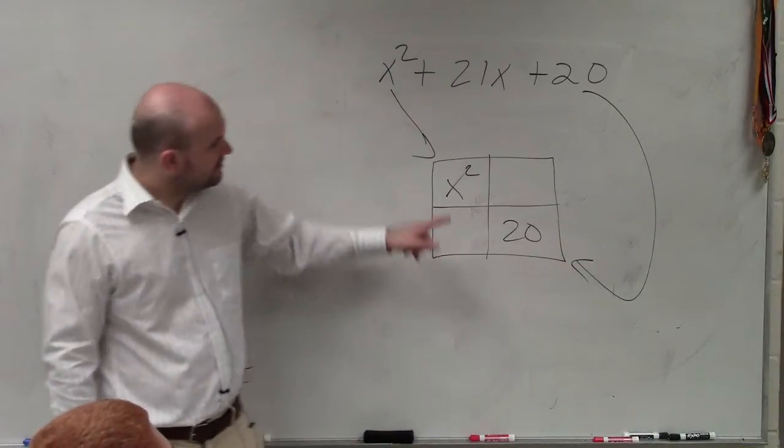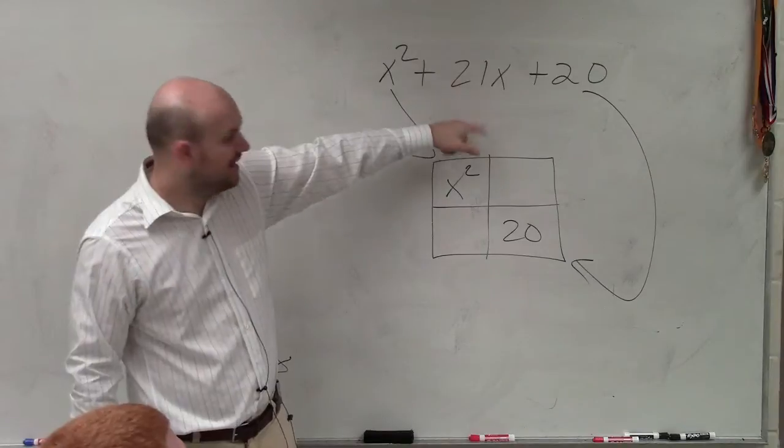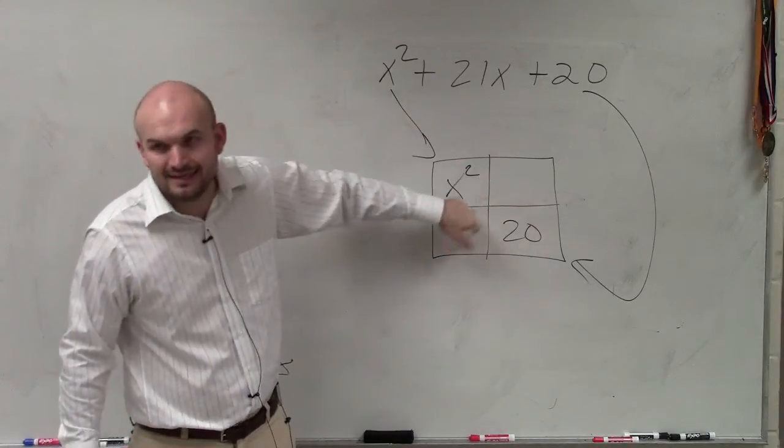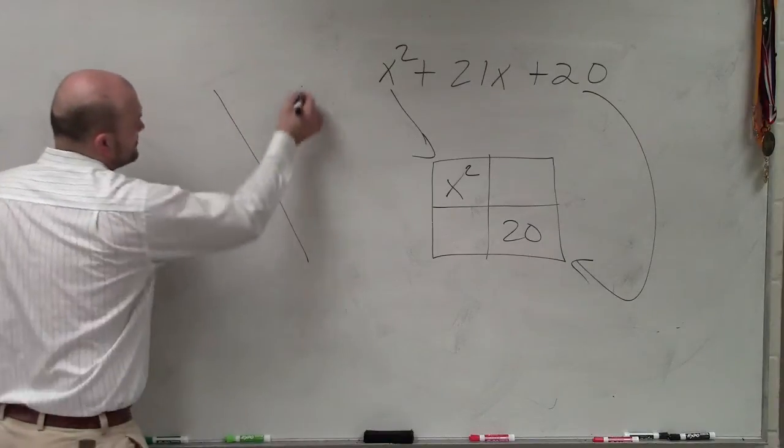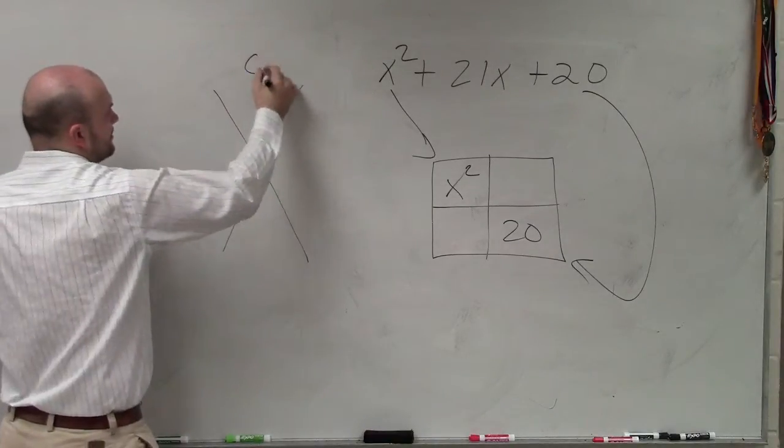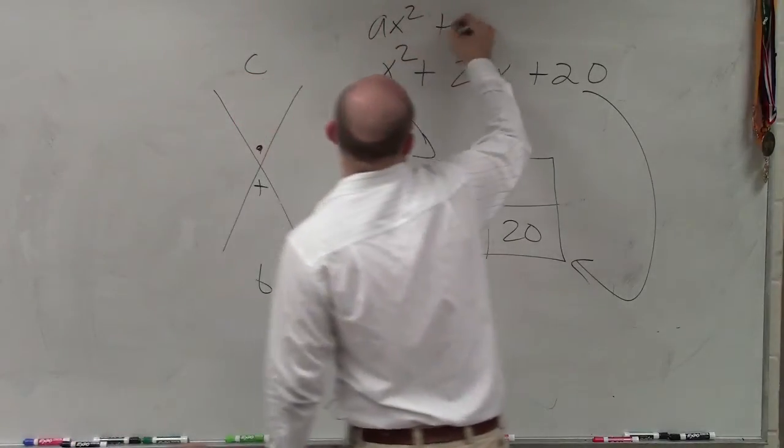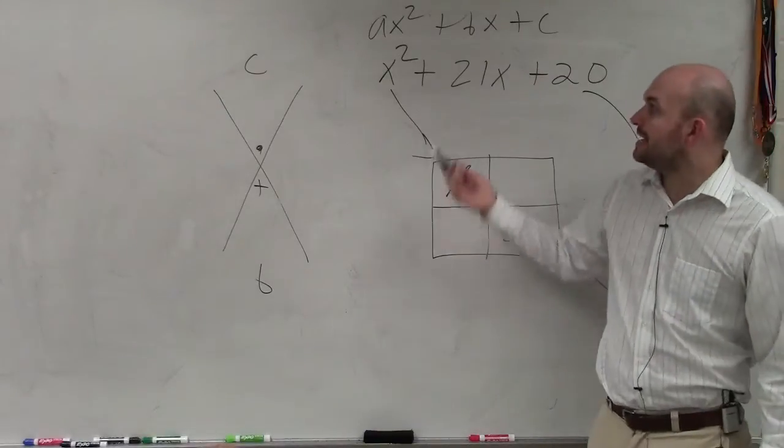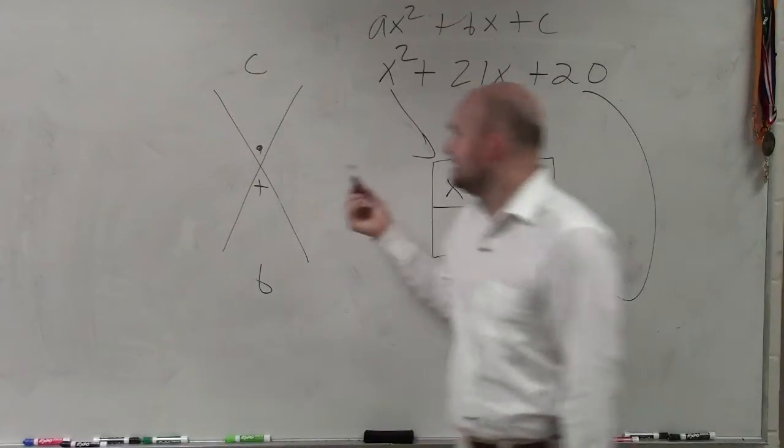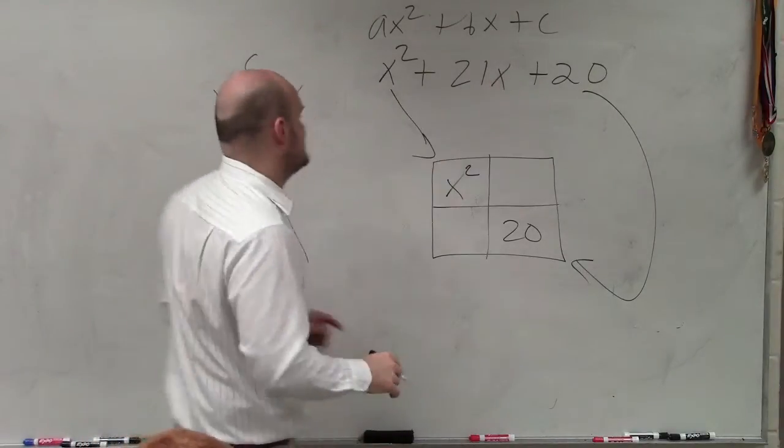Now, the problem is, I only have 21x. I need to somehow fill in these other two boxes. So to do that, what we do is what we call the AC method. And ax squared plus bx plus c. This is what we call a quadratic. And if you guys look at the value of c, in this case, is 20. And the value of b, in this case, is 21.